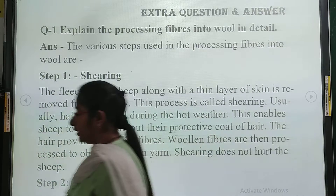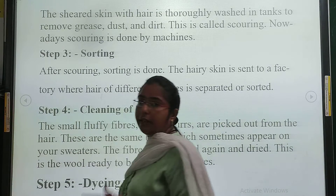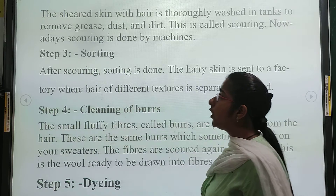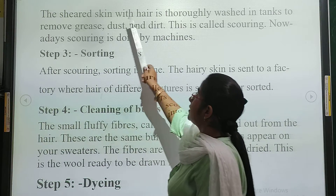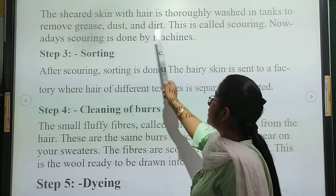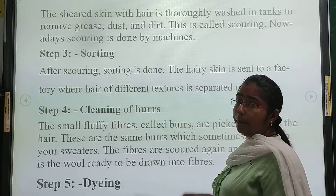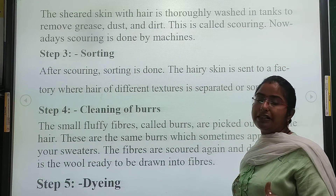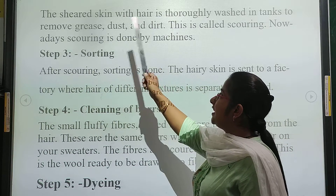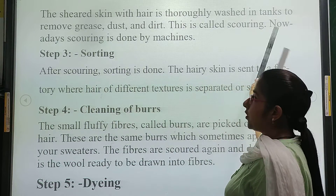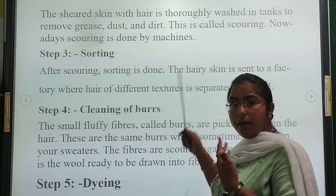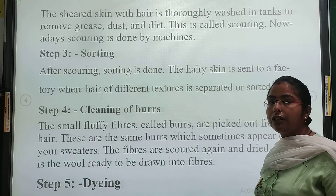Step 2 is scouring. The sheared fleece with burrs is thoroughly washed to remove grease, dust, and dirt. We wash it to remove the grease, dust, and dirt. This process is called scouring. Scouring is done by machine.